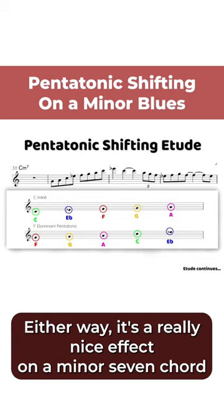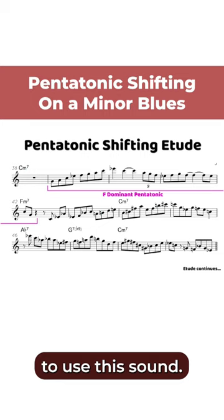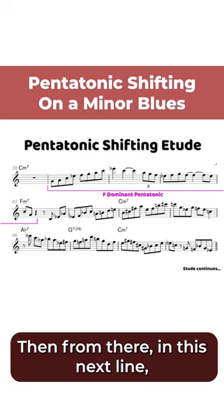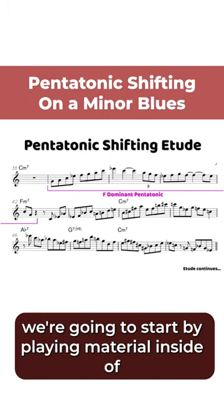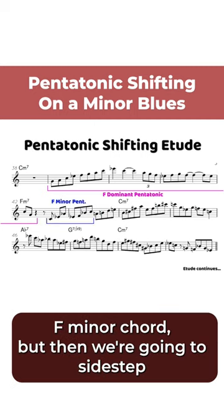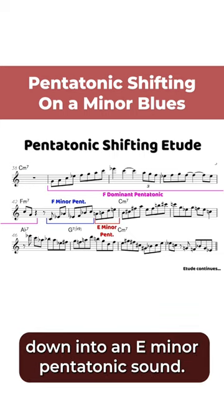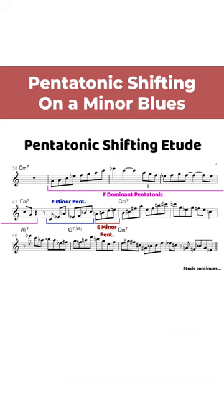Either way, it's a really nice effect on a minor seven chord to use this sound. Then from there, in the next line, we're going to start by playing material inside of F minor pentatonic because we're on the F minor chord, but then we're going to sidestep — or shift — down into an E minor pentatonic sound.